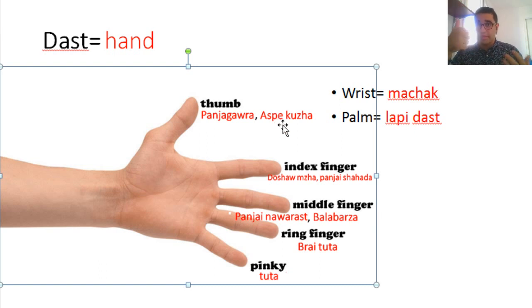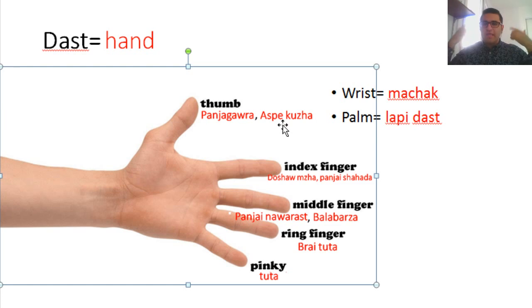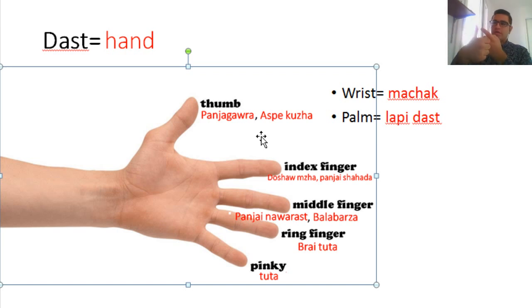This is aspekuja — the traditional name for thumb. Aspek refers to lice — those small things on your hair. In Kurdish culture, they killed lice by smashing them between their fingers using the thumb. So this thumb is called the lice killer. Aspekuja means lice killer.